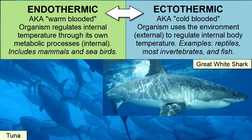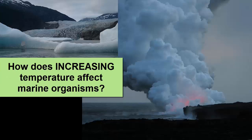Ectothermic and endothermic are end-member descriptions of heat regulation — in the natural world, organisms sit somewhere between the two. For example, though fish are generally considered ectothermic, tuna and the great white shark are considered endothermic because they use internal metabolic processes to raise their internal temperature higher than their surrounding environment. However, their internal temperature is also affected by their environment and fluctuates as they move through varying ocean temperatures.